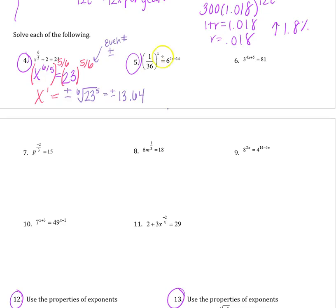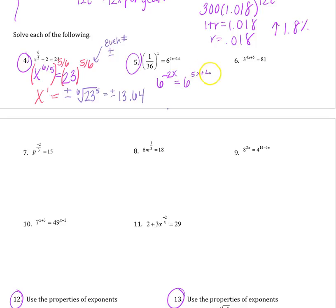When the variable is in the exponent, get a common exponential base. Looking at 1 over 36: rewrite as 6 to the negative 2, since negative exponents create reciprocals. So the left side becomes 6 to the negative 2x and the right is 6 to the 5x plus 14. Drop the base and solve the exponents: negative 2x equals 5x plus 14, giving negative 7x equals 14, so x equals negative 2.